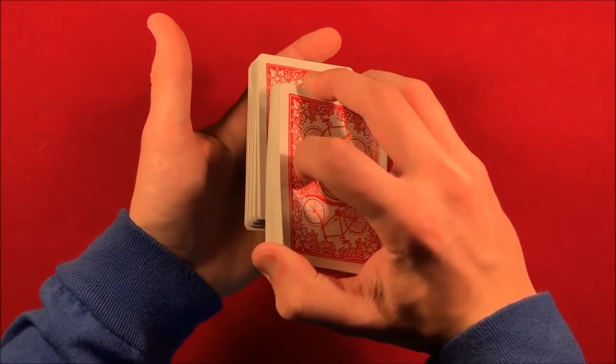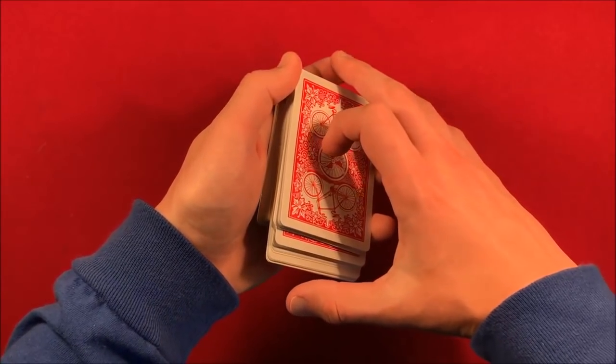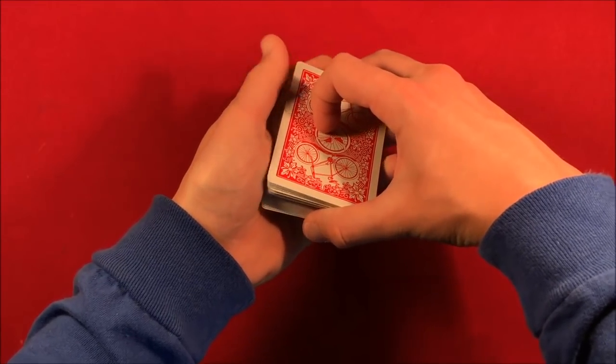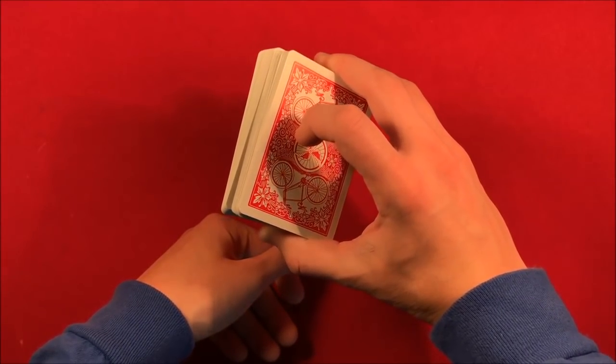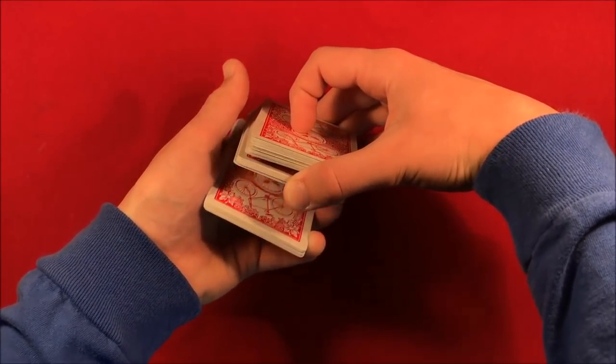He starts to dribble the cards a little bit out-jog, as you can see. What he does is he pulls up from that out-jog and gets a thumb break like this. Obviously he's doing this a lot faster. I'm just showing you guys the explanation, but he gets the thumb break.